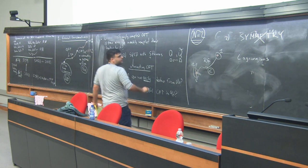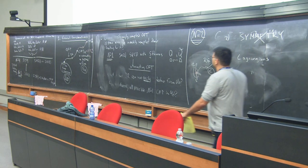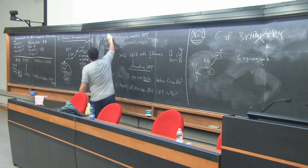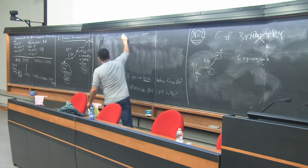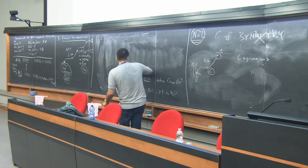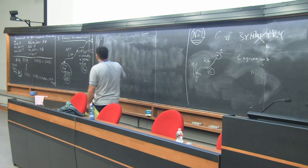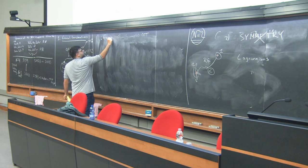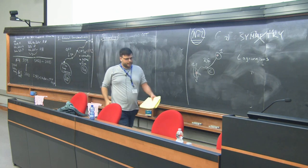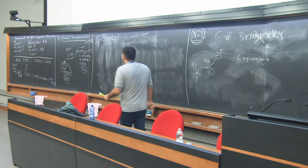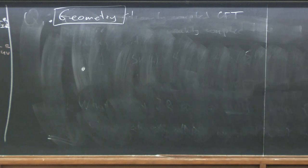If we are giving up symmetry as our guiding principle, we need some other guiding principle to make progress. We cannot just give up symmetry and do something useful. The other guiding principle we will have is geometry. We will discuss another way to engineer four-dimensional CFTs: instead of starting from another four-dimensional CFT and flowing to it, we can start from a CFT living in a different number of dimensions.